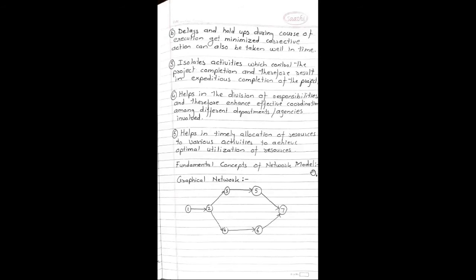Fundamental concepts of network model. This is the graphical network: 1, 2, 3, 4, 5, 6, and 7. These are the activities. This is the starting point and this is the end point.